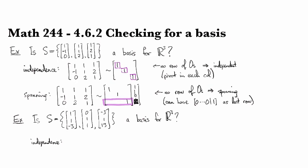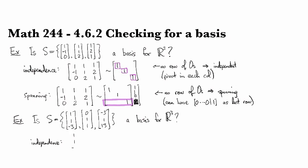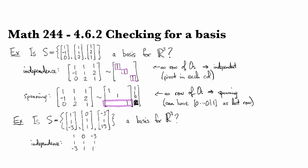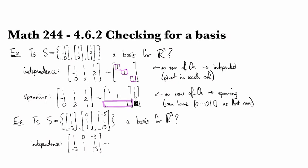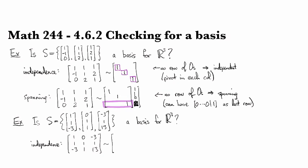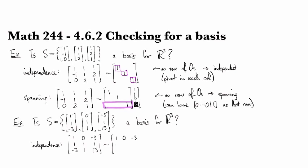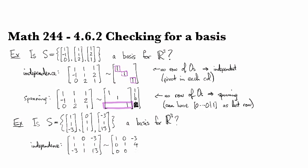So is it independent? Well, let's see. So if we do the matrix [1, 1, -3; 0, 1, 1; -3, 1, 13] and we row reduce, then what we end up with is [1, 0, -3; 0, 1, 4; 0, 0, 0].